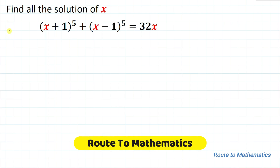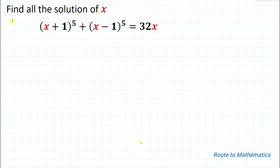Hello everyone, welcome to Root 2 Mathematics. In this video we are going to solve this interesting question: find all the solutions of x satisfying (x+1)^5 + (x-1)^5 = 32x. We are asked to find all solutions of x that satisfy this given equation. Without any delay, let's start the solution.